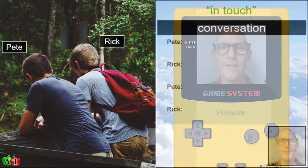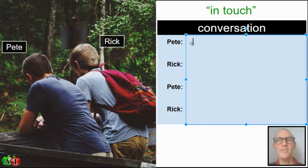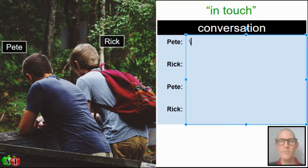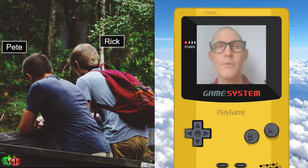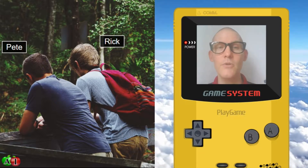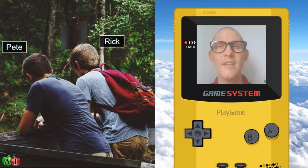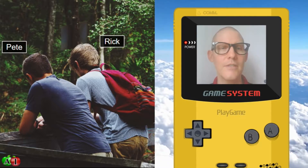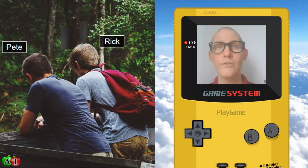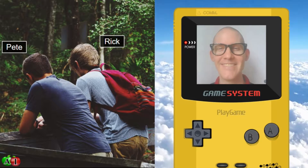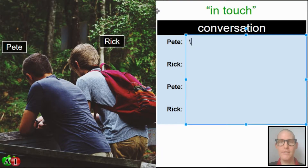Let's see what they're talking about. If I quickly summarize the picture: I see two young guys leaning against the railing of a deck, staring downward, having a conversation, near a big woods or forest. Let's see what they're saying — Pete starts the conversation.